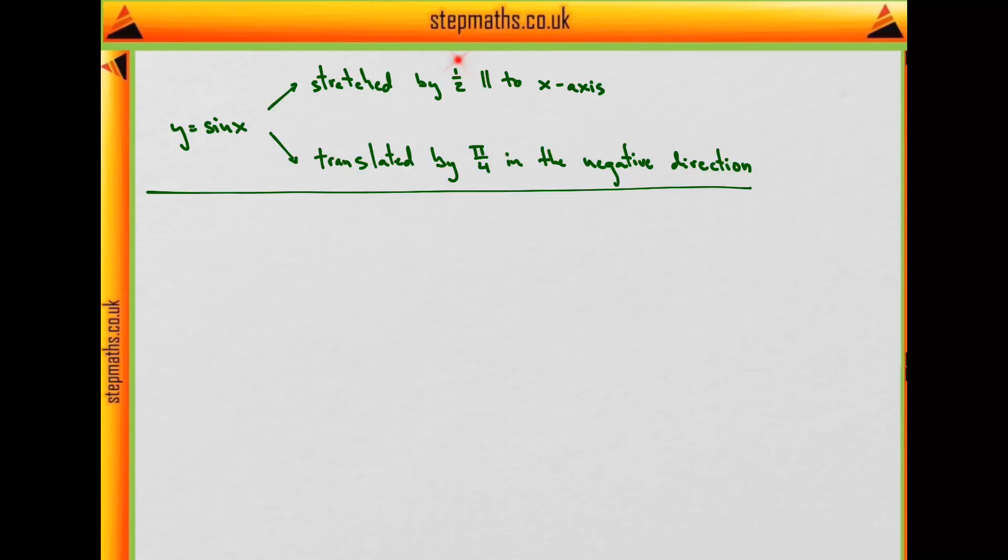First we stretch it by a factor of 1/2, parallel to the x-axis, and then we translate the whole graph by π/4 in the negative direction. We're supposed to say what the equation of the final graph will be after both these transformations are applied.